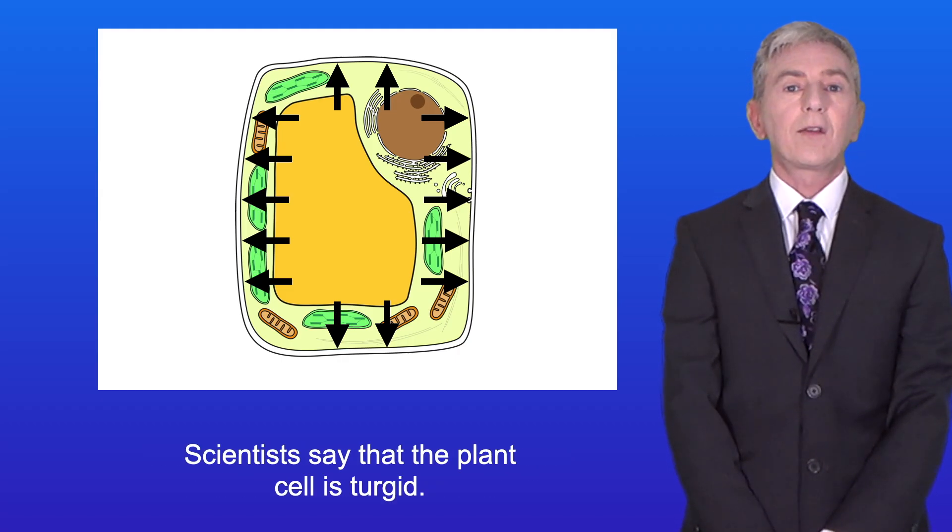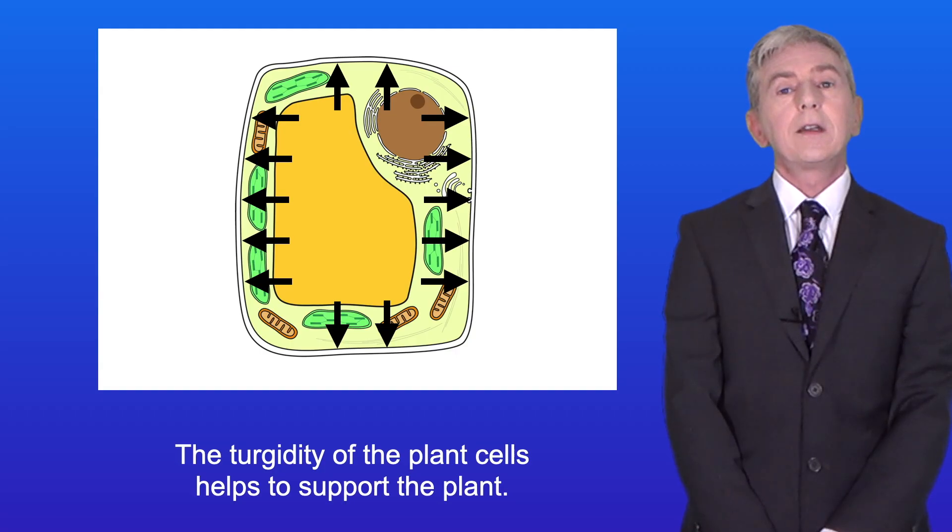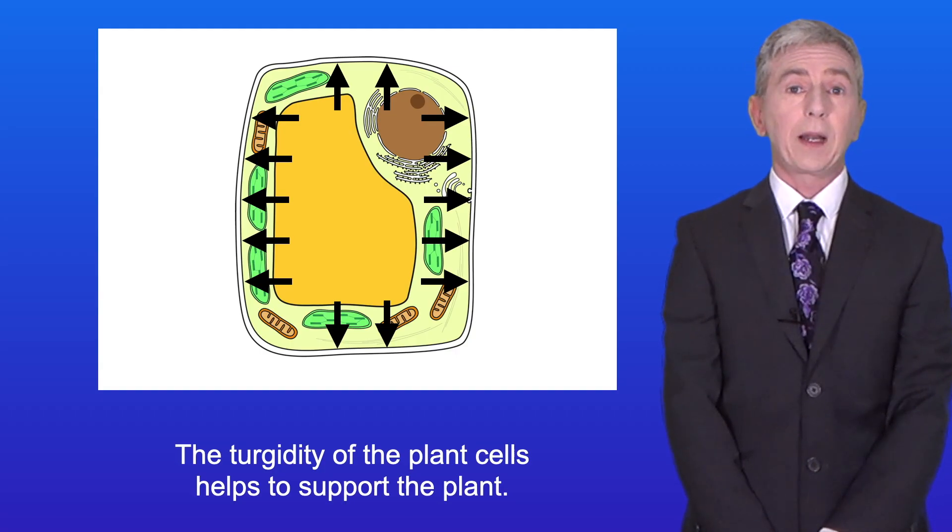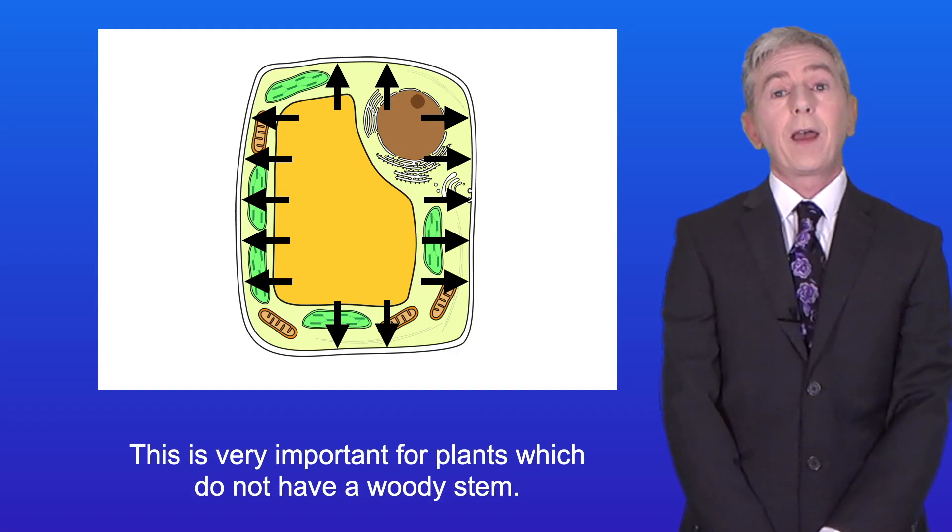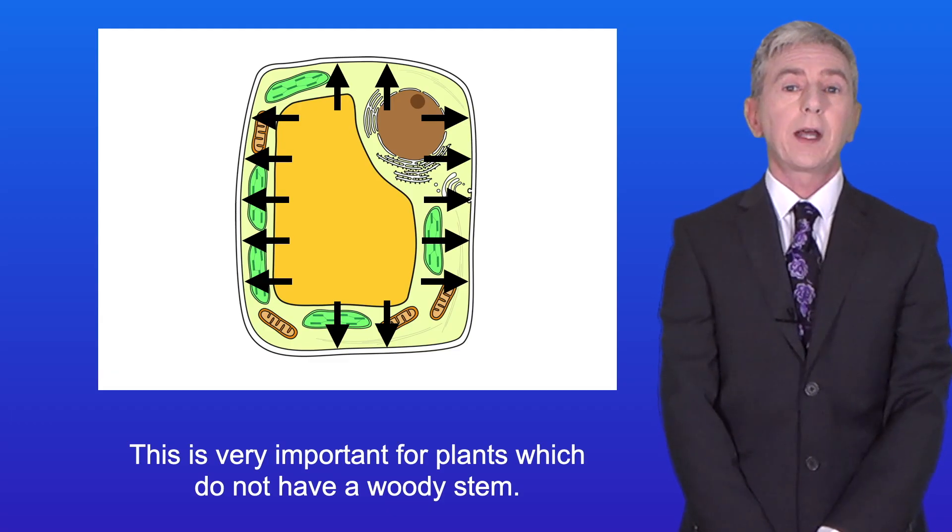Scientists say that the plant cell is turgid, and the turgidity of the plant cells helps to support the plant. This is very important for plants which do not have a woody stem.